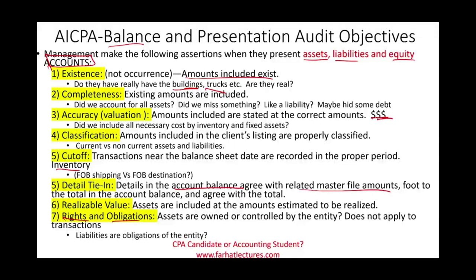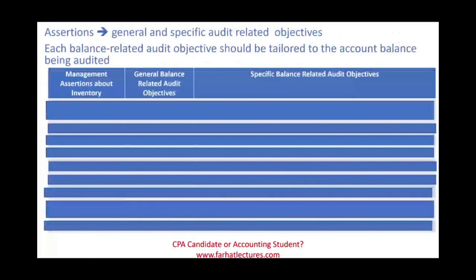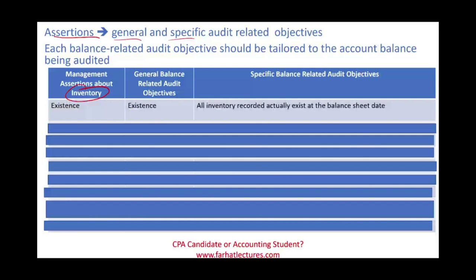We cannot say an asset or a liability is fairly stated until we go over all these assertions. To illustrate the point, we're going to work with inventory. We'll make assertions about inventory and have general and specific audit-related objectives. For example, when we claim that the inventory exists, the general balance-related objective is existence. The specific one: all inventory recorded actually exists — or do we have numbers but not the actual inventory?